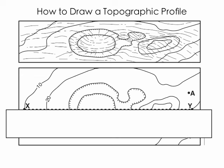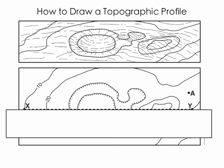So let's get started. The first step is to always take a piece of scrap paper and line it up along the line of which we're going to profile. Now you'll notice that the contour lines in this case cross over our scrap paper. And what we want to do is make a small mark wherever a contour line crosses our scrap paper.